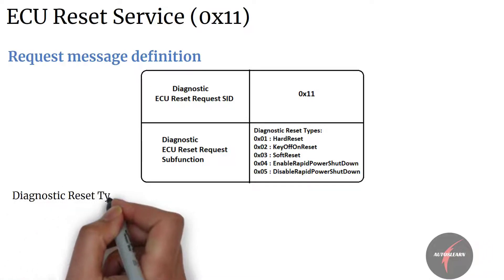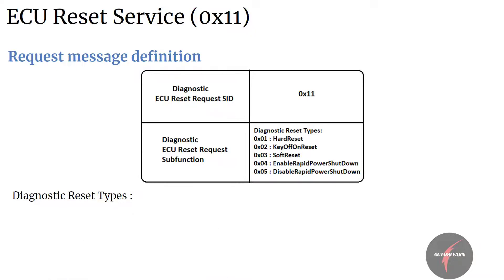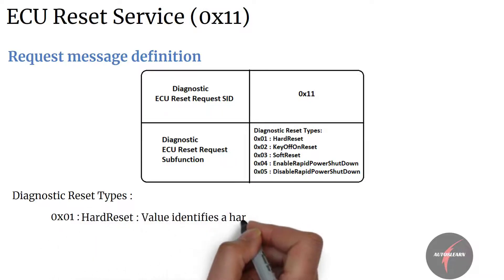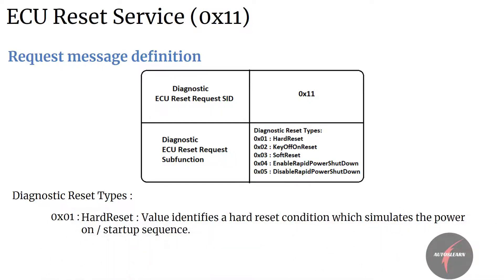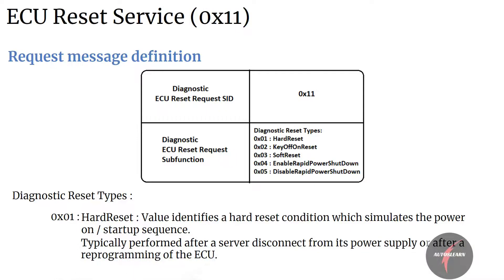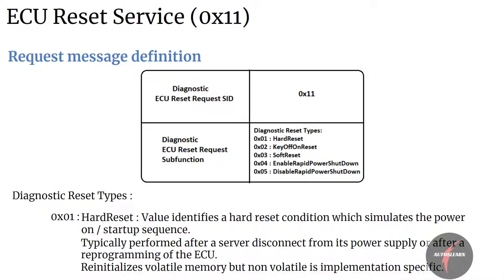Let's now have a deeper look into the different reset type values. Firstly, value zero is reserved by the ISO 14229 standard. Next, value one maps to hard reset. This value identifies a hard reset condition which simulates the power-on startup sequence, typically performed after a server has been previously disconnected from its power supply or after a reprogramming of the ECU.